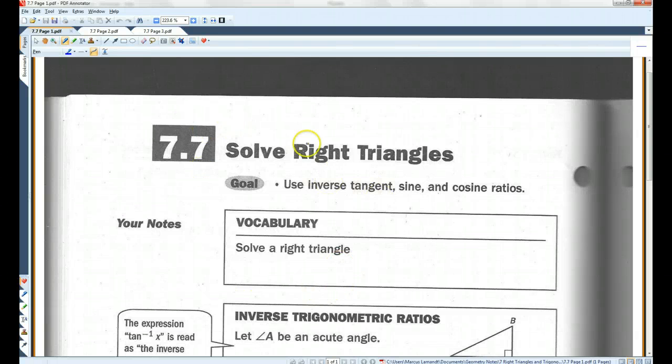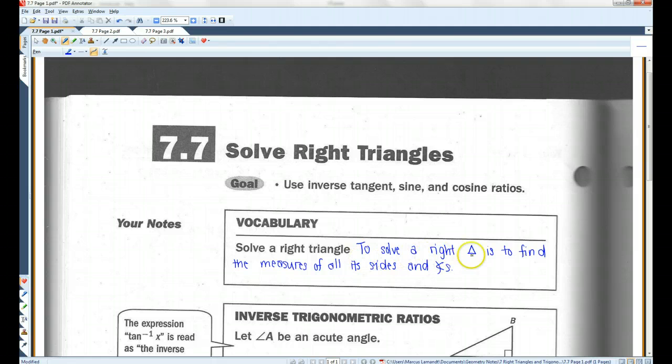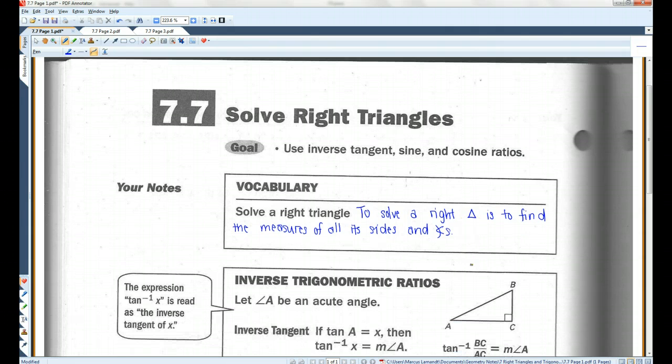All right, if you could please turn to 7.7 solve right triangles. To solve a right triangle is to find the measures of all its sides and angles. So if you're given a problem and it says solve the right triangle, you should be getting more than one answer. You're not just looking for one side or one angle. You're looking for all the sides and all the angles.